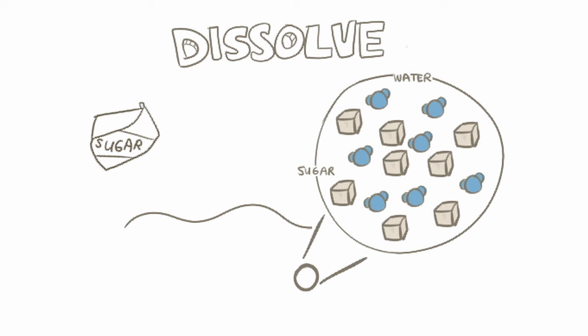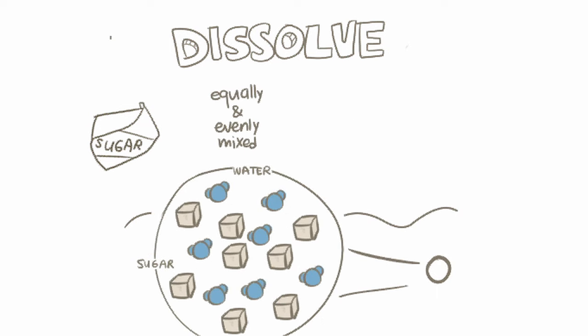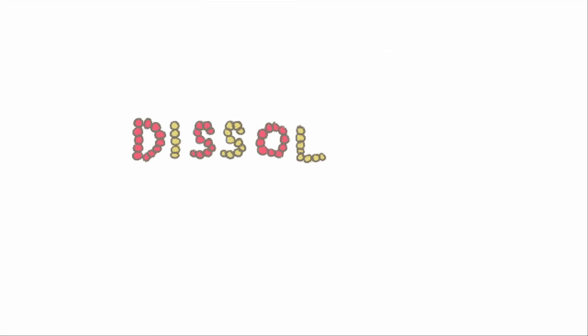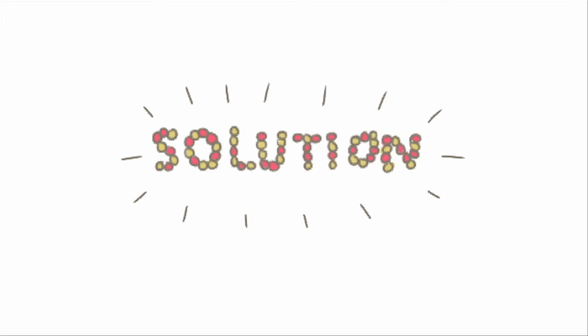More specifically, since the parts of the mixture are spread out equally and evenly everywhere, we can call this mixture a solution. So when we say that something dissolves, it just means that it goes into an evenly distributed mixture called a solution.